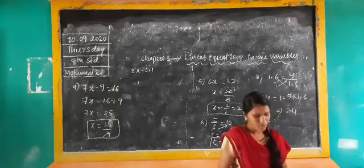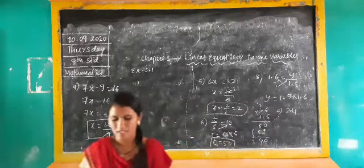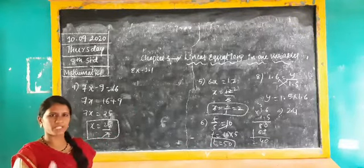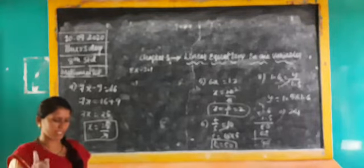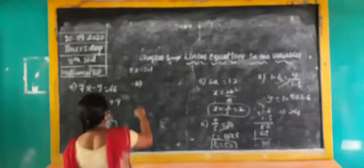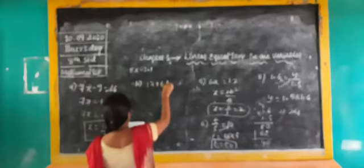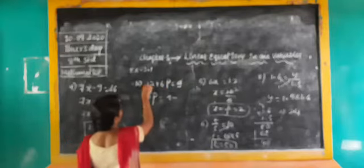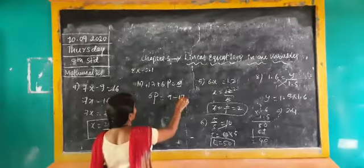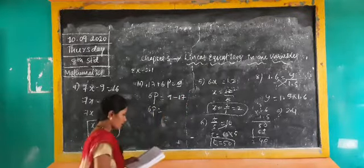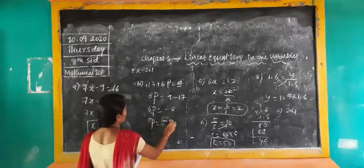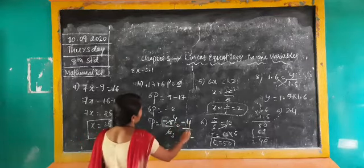Next problem: 14y minus 8 is equal to 13. So 14y equals 13 plus 8, which is 21. y equals 21/14 — simplify by cancellation. Eleventh question: 17 plus 6p is equal to 9. Keep 6p aside — 6p equals 9 minus 17, which is minus 8. So p equals minus 8/6, which simplifies to minus 4/3.